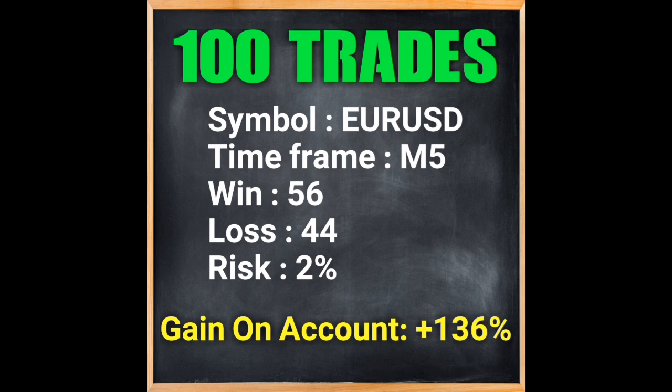The result of 100 consecutive trades in the biggest symbol on a 5-minute timeframe is 56 wins and 44 losses. Taking a trading risk of 2 percent, and with take profit bigger than stop loss according to the strategy, the gain on account equals 136% profit — which is a great statistic.